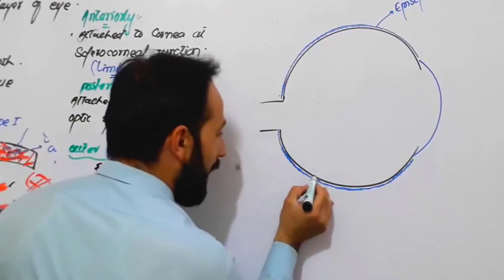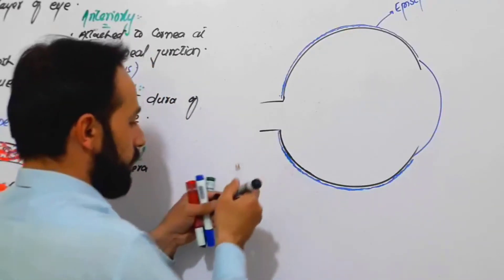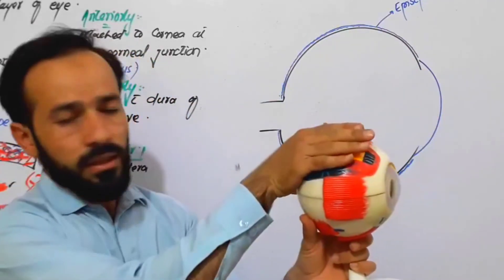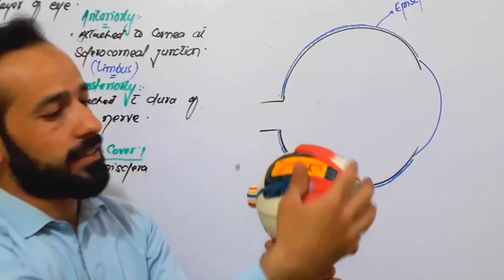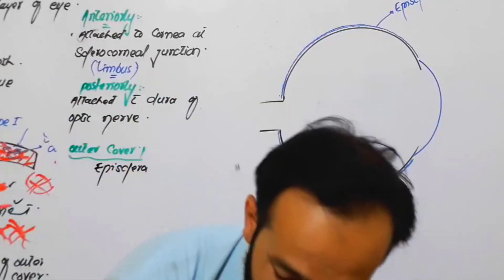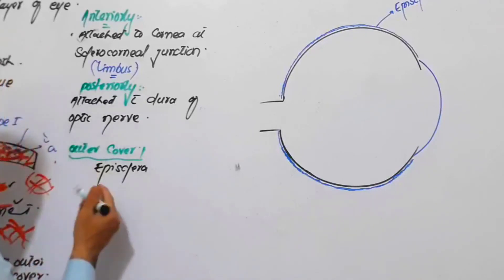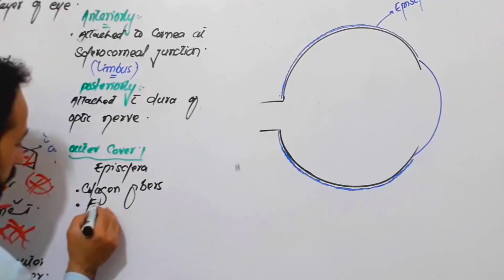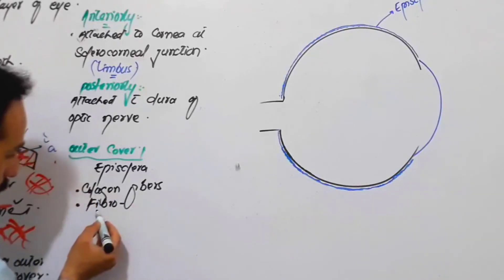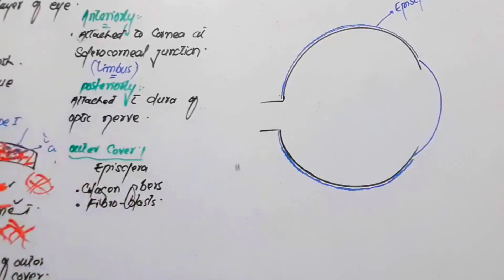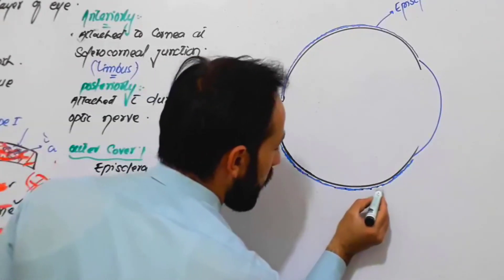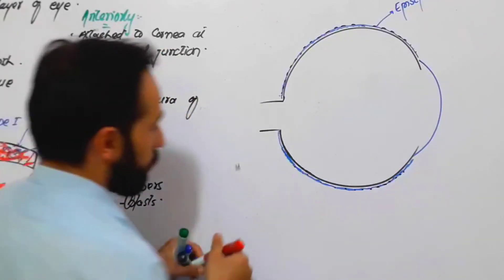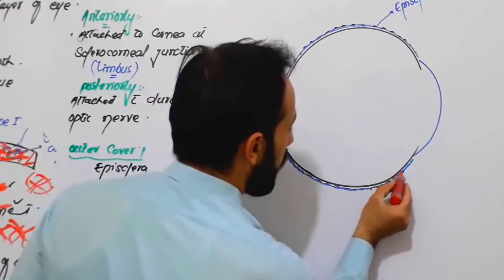The episclera is made up of collagen fibers and some fibroblast cells. These fibroblasts produce the collagen fibers deposited in the episclera. So there are fibroblast cells and lots of collagen fibers in the episclera.